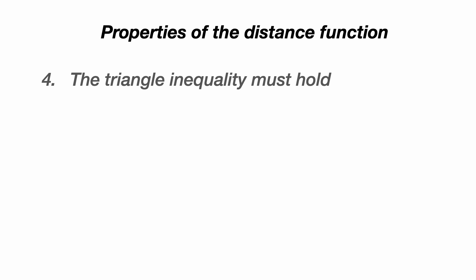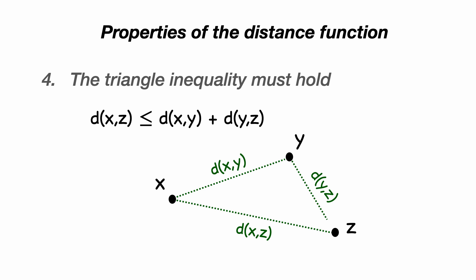The fourth and final property of the distance function for a metric space is that the triangle inequality should hold. And we write this as the distance between x and z is less than or equal to the distance from x to any y plus the distance from that y to our original z. And so if we draw a picture of what's going on here, we have our points x, y, and z. And if we draw the distance from x to z, we know that this is going to be less than or equal to the distance from x to y plus the distance from y to z.